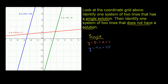But just so you see it, there's actually another system here. Another system would be the green line and this red line. This point of intersection right here represents an x and y value that satisfies both y is equal to 0.1x plus 1, and this point also satisfies y is equal to 4x minus 6. So if you look at this system, there's one solution because there's one point of intersection of these two lines. This system also has one solution because it has one point of intersection.